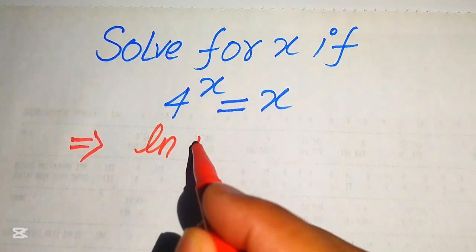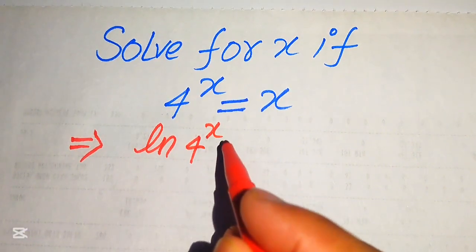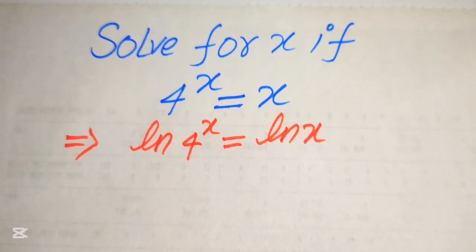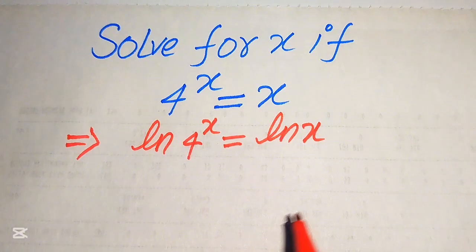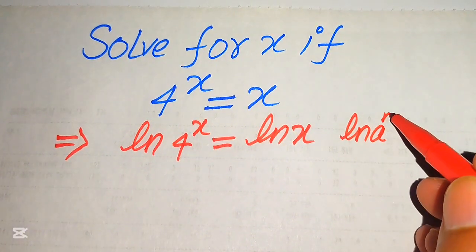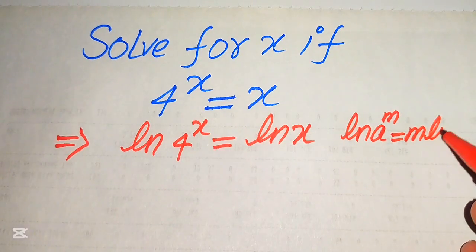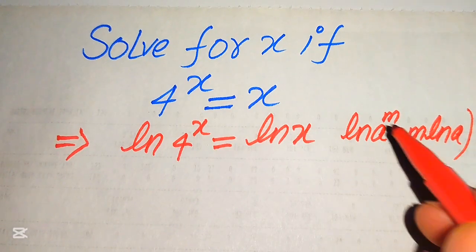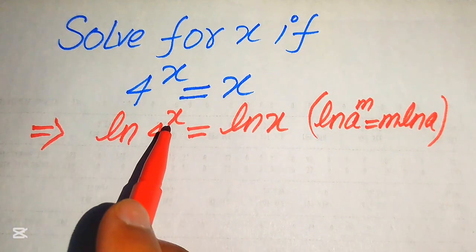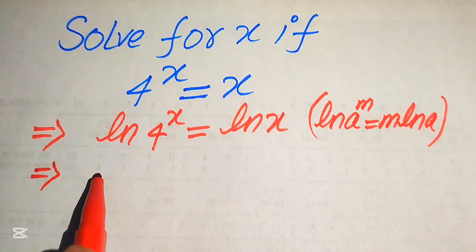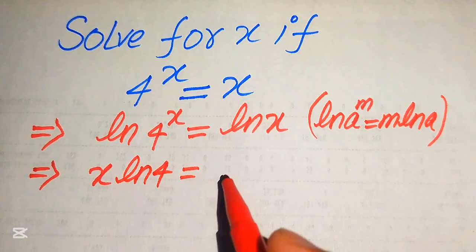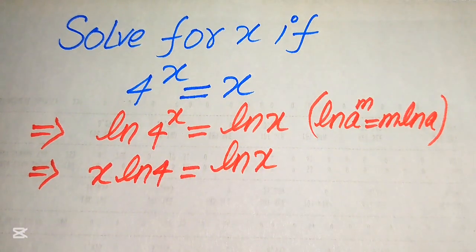We apply natural log and it will be written as log of 4 to the power of x equals log of x. In the next step we use the property of log: log of a to the power of m equals m times log a. According to this property we move the exponent x to the front, giving x times log 4 equals log of x.